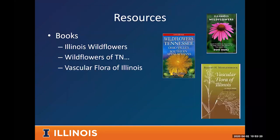There are some good books out there: Illinois Wildflowers is a great one; Vascular Flora of Illinois if you're into the technical side. I also put Wildflowers of Tennessee on here — it sounds funny since we're in Illinois, but that book covers the Ohio River Valley region, so for the southern third of the state it's within its range of coverage. It's well laid out, covers many different plants, and I particularly recommend it for the southern half or third of the state.